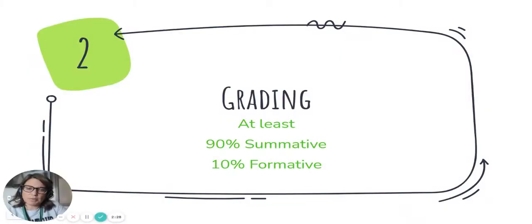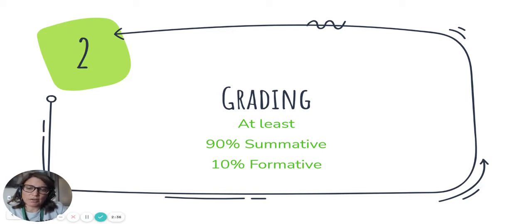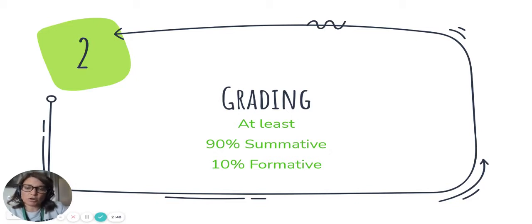At Southview, the grading policy is set school-wide so that at least 90% of the summative — all tests, projects, or things that allow learners to demonstrate their learning — are worth 90% of their grade. In some classes it is worth 100%. With summative work, learners are always able to reassess, retake the test, or go back to a project and make adjustments to show they have mastered the learning at any point. 10% of that work is formative.